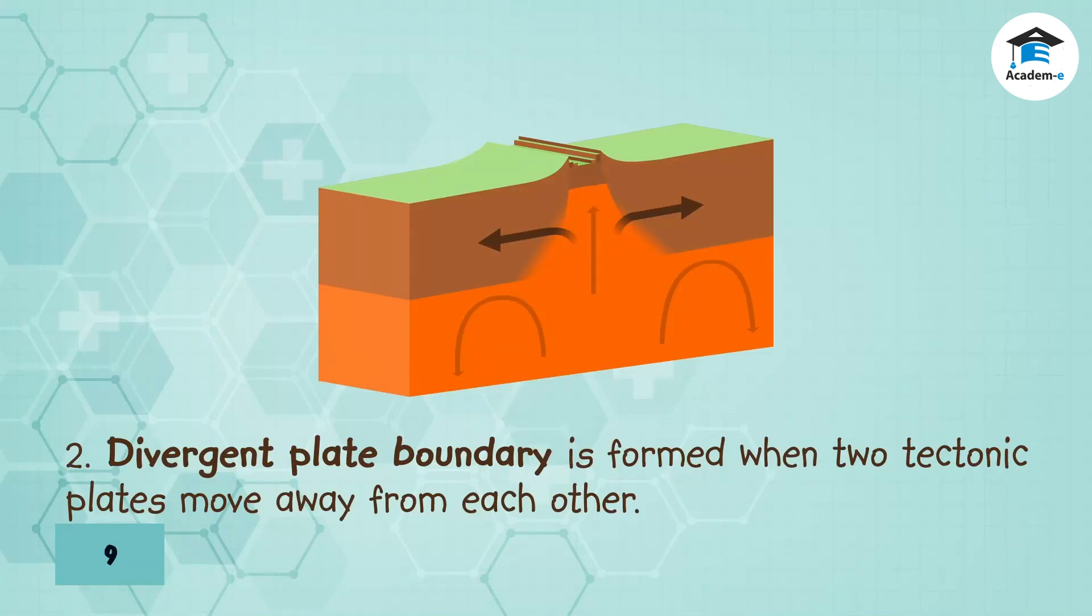Divergent plate boundary is formed when two tectonic plates move away from each other. When two ocean plates move apart, magma rises from the mantle to fill the gap. When the magma cools, a new seafloor is formed. This is called seafloor spreading. Rift valleys form along the rift or areas of divergence.